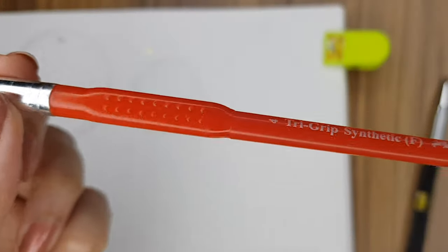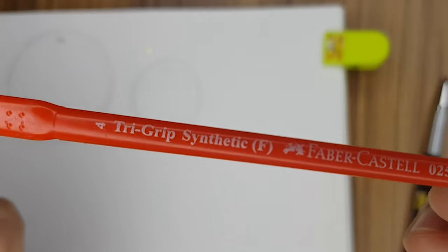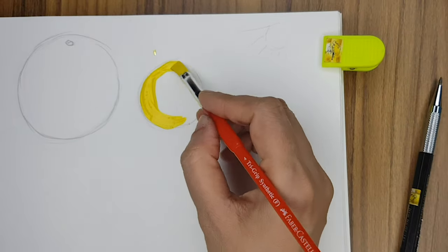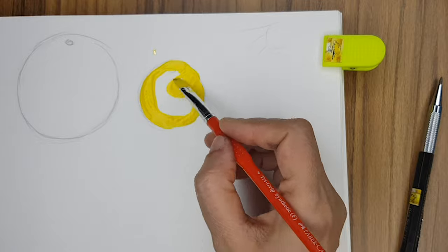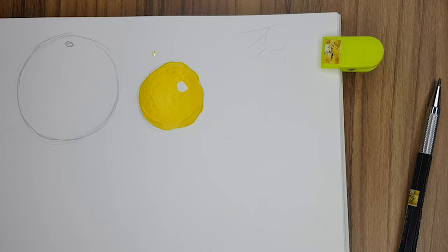After you've drawn the picture nicely, clean your paper by erasing all unnecessary lines. Take a small flat brush, take lemon yellow color, and color the lemon thoroughly with opaque lemon yellow by leaving the highlight as seen in the picture.